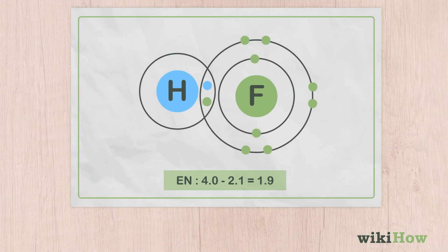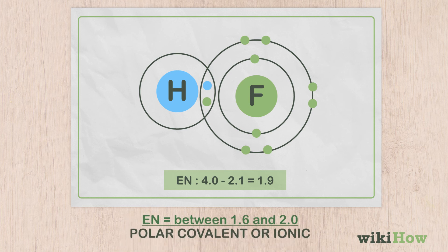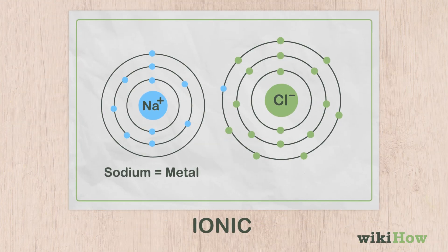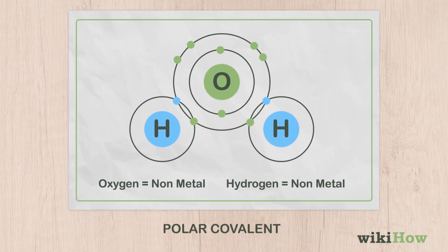For electronegativity differences between 1.6 and 2.0, the bond could be either polar covalent or ionic. If there is a metal in the molecule, the bond is ionic. If both atoms are nonmetals, the bond is polar covalent instead.